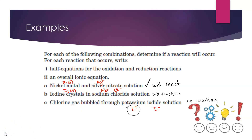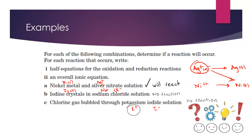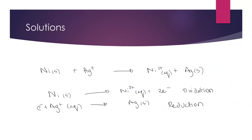The only reaction that occurs is A: nickel solid with silver ions. Silver is higher on the electrochemical series than nickel, so Ag⁺ spontaneously reacts with Ni(s). The oxidation half equation is: Ni(s) → Ni²⁺ + 2e⁻. The reduction half equation is: Ag⁺ + e⁻ → Ag(s), requiring two silver ions to balance the two electrons. The full balanced equation is: Ni(s) + 2Ag⁺ → Ni²⁺ + 2Ag(s).